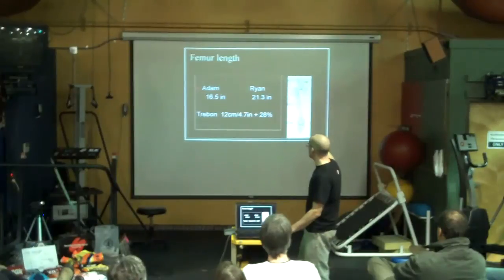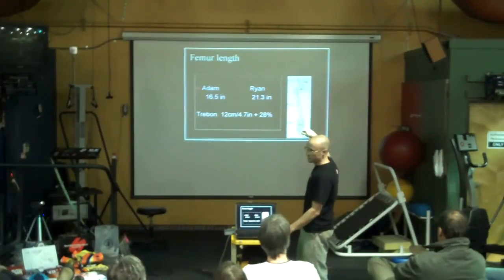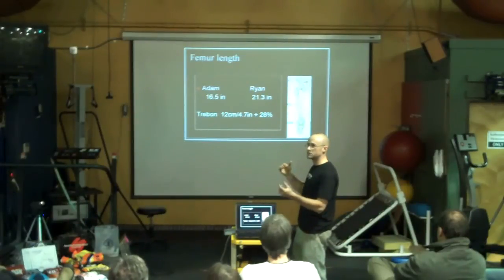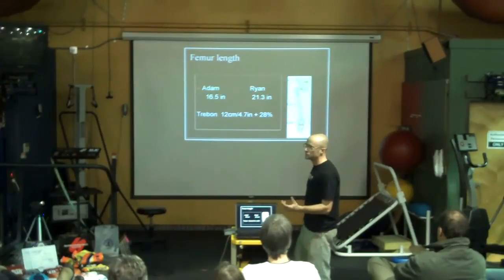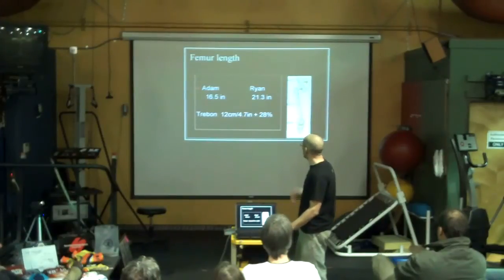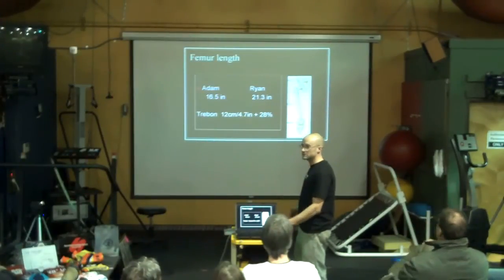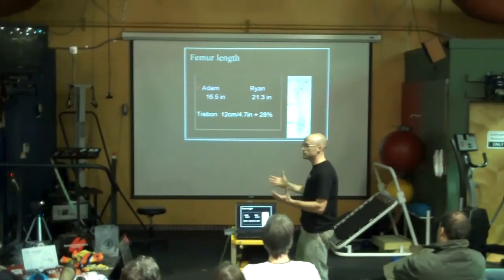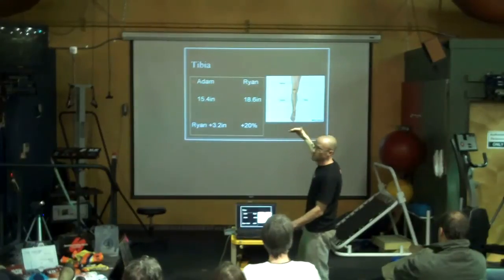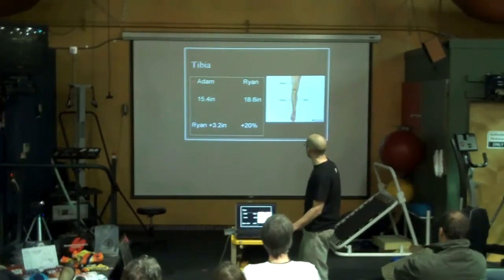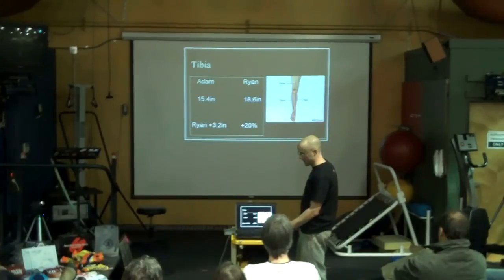When we measured Ryan and Adam's femur lengths, we just took it off their trochanter down to the joint line of their knee. It's not a perfect measure, but you see there's a huge discrepancy in how long Ryan's legs are. When you see him ride, it's obvious, it's a stork. There's a 28% difference in leg length, and Adam doesn't have small legs. That's a huge biomechanical difference between the two of them, that we'll talk about later. The tibias, the lower bone of the leg, three and a half inches between the two of them, that's still another 20% that Ryan has on Adam's legs.